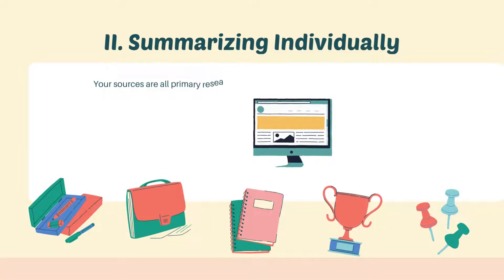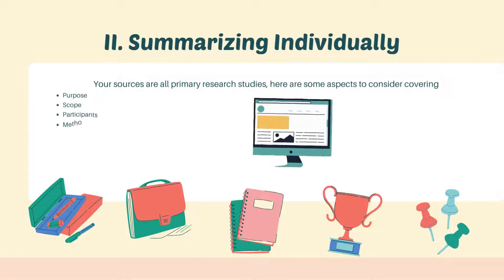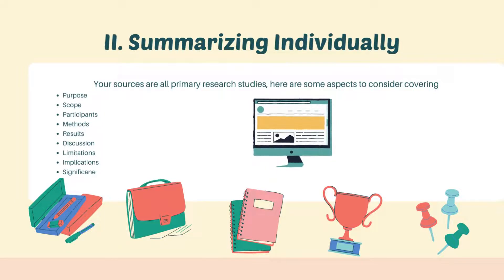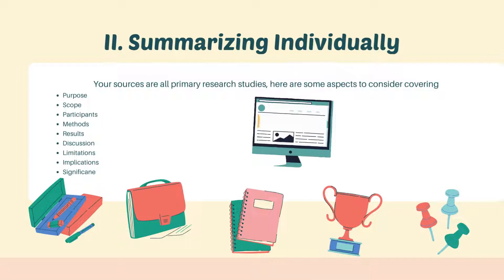Number two: summarizing individually. Depending on the assignment, your professor may prefer that you discuss each source in your literature review individually. Your professor may give you specific guidelines as far as what to cover in these paragraphs or sections. If your sources are all primary research studies, here are some aspects to consider covering: the purpose, the scope, participants, results, discussions, limitations, implications, and significance. Each section of your literature review in this case will identify all of these elements for each individual article.